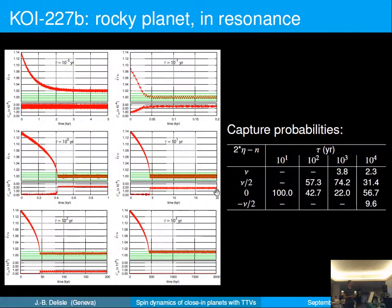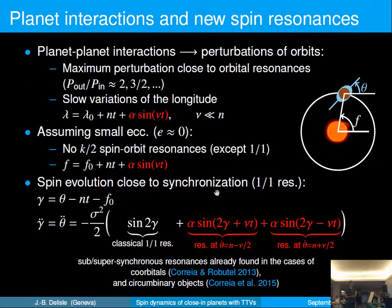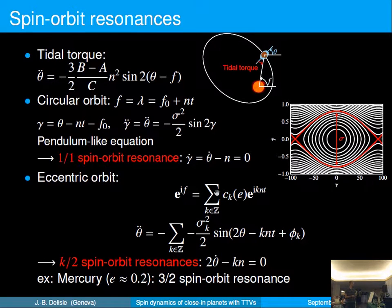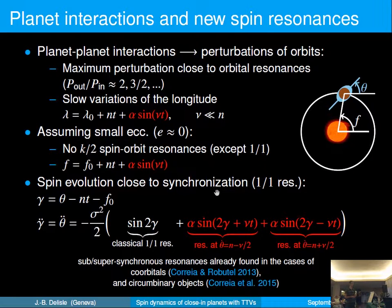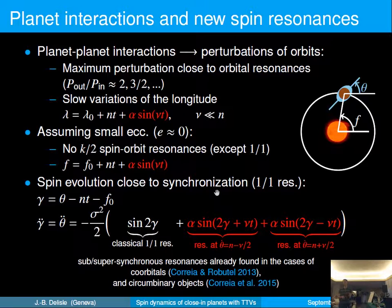Response: The statement that only the synchronous resonance exists — without the k/2 resonances — is for the unperturbed case with circular orbits. If the eccentricity is small but nonzero, those k/2 resonances will have very small widths proportional to the eccentricity. At larger eccentricities, you get all the k/2 spin-orbit resonances, and in fact you also get k/2 plus nu/2 resonances.